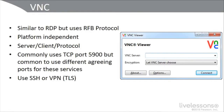VNC is similar to Remote Desktop Protocol, but it uses a different protocol known as RFB. It's platform independent and a server-client protocol. It typically uses TCP port 5900, but it can use different agreed-upon ports for these services. You need to be aware of that.